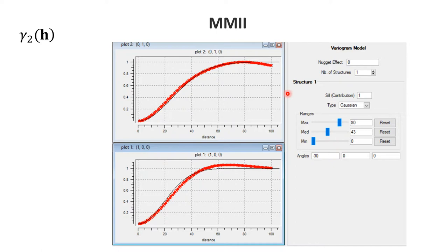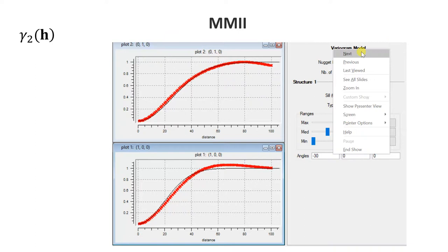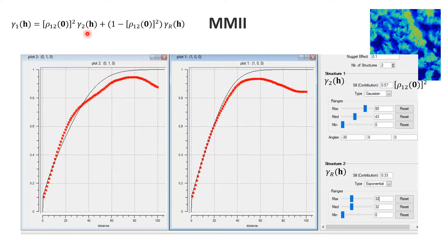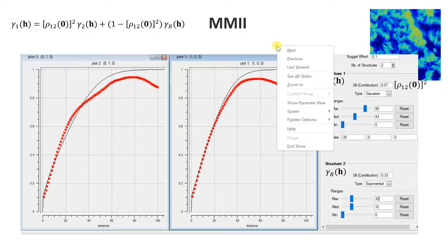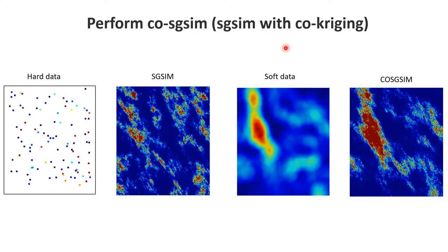The primary variogram has two structures: one related to the secondary variogram times the correlation coefficient squared, and a residual component. This makes sense because the secondary component is the slowly varying part, and we need to add a highly varying part to get a legitimate variogram for the primary variable. In practice, we model the secondary variogram first, then add a residual structure. The squared correlation coefficient of 0.76 is 0.57. The residual has a nugget of 0.1, and the remainder is 1 − 0.57 − 0.1 = 0.33, with an isotropic residual structure with range 32.